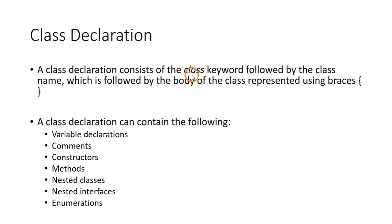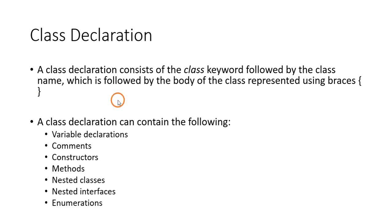Then comes the class declaration. You create a class using the class keyword — in Java, 'class' is a keyword written in all small letters — followed by the class name, and then the definition of the class within braces. The class definition can have variables, comments, constructors, methods, nested classes, nested interfaces, and enumerations.